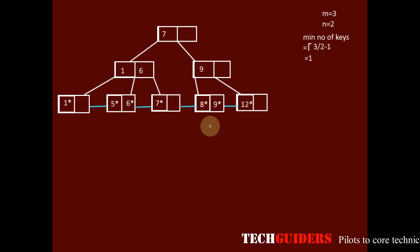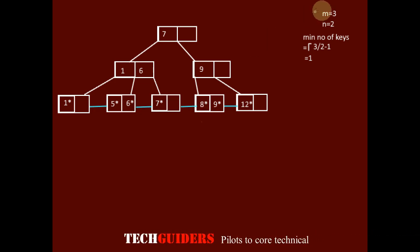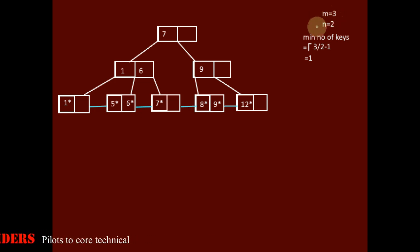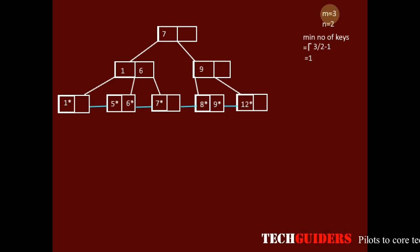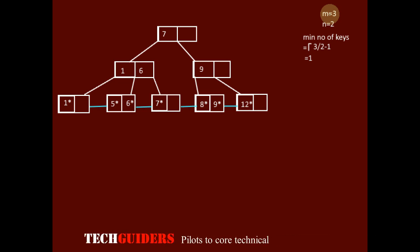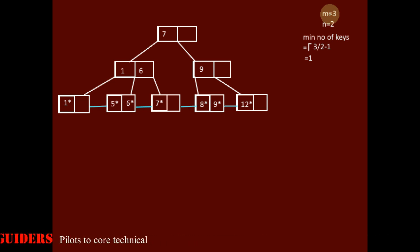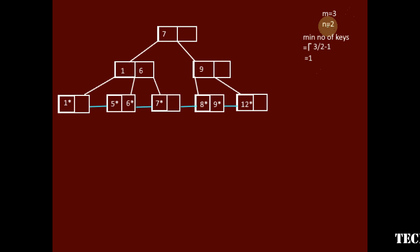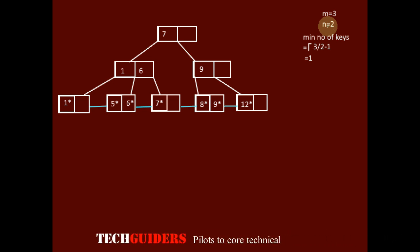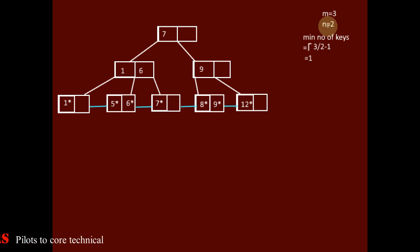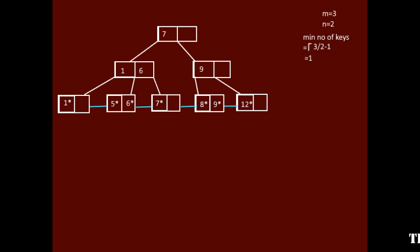Consider a B+ tree where the order of the non-leaf node m equals 3 and the order of the leaf node n equals 2. If m equals 3, the minimum number of children required in a non-leaf node is ceil(m/2) = ceil(3/2) = 2, so the minimum number of keys required is 2 minus 1, which is 1. In a leaf node, the minimum number of keys is ceil(n/2) = ceil(2/2) = 1. So the minimum number of keys required in every node is the same, which is 1.